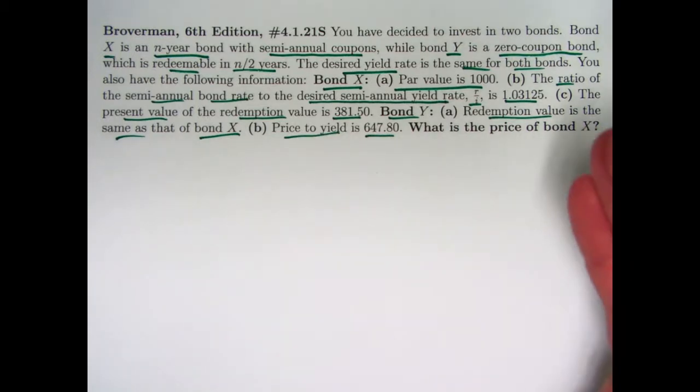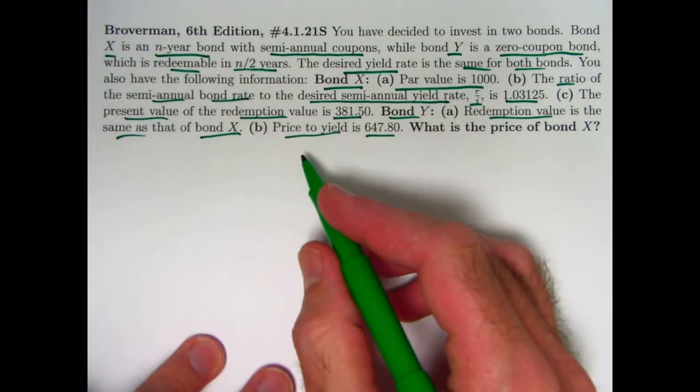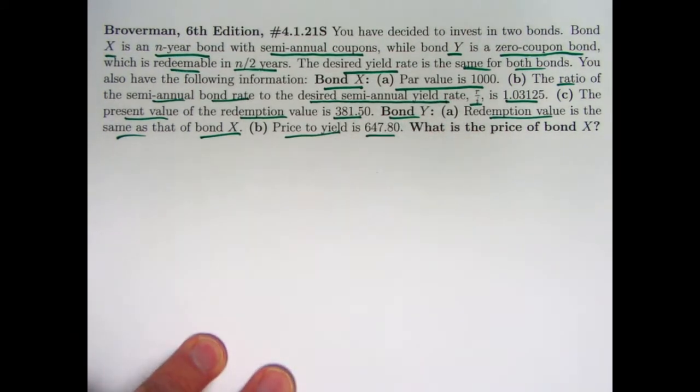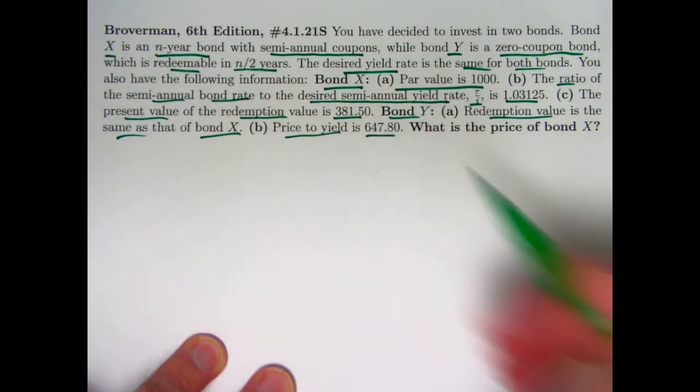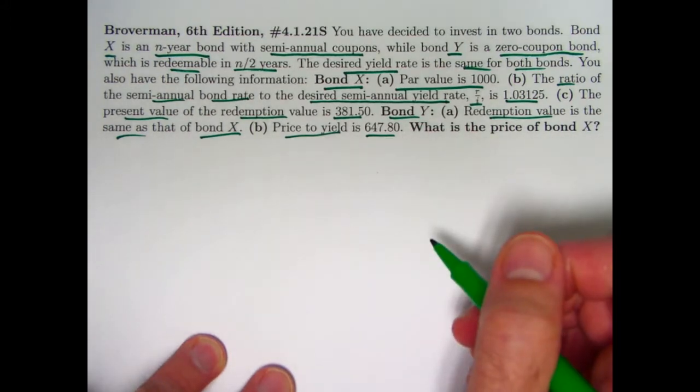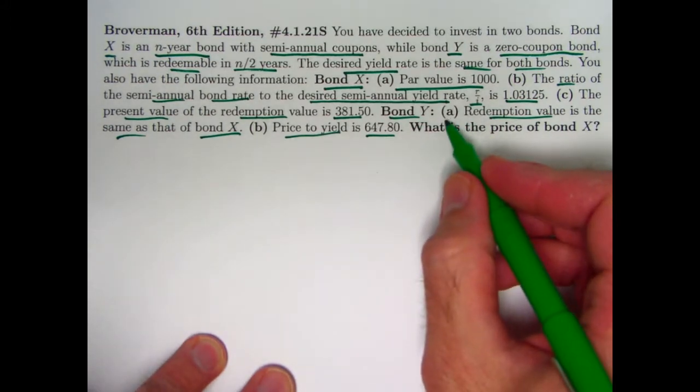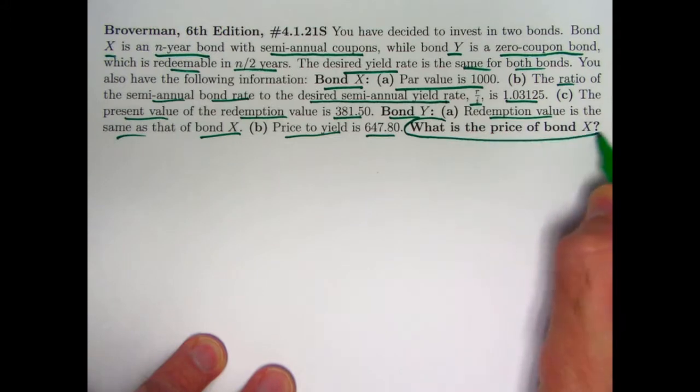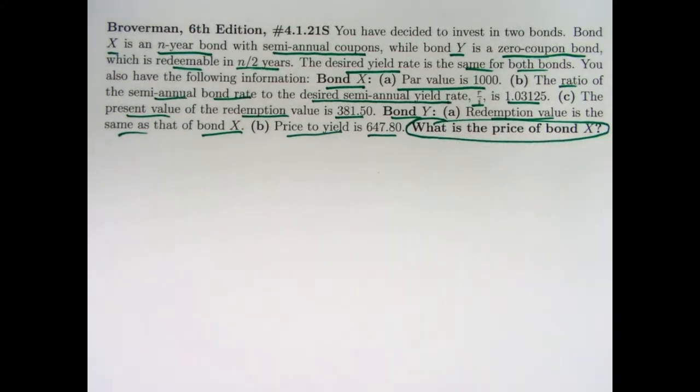But no, actually it doesn't mean that. It means the present value, the price of the redemption value at the given yield rate is 647.8. That's for bond Y. The goal is to solve for the price of bond X, which would be the present value of all the coupons plus the redemption value for bond X.